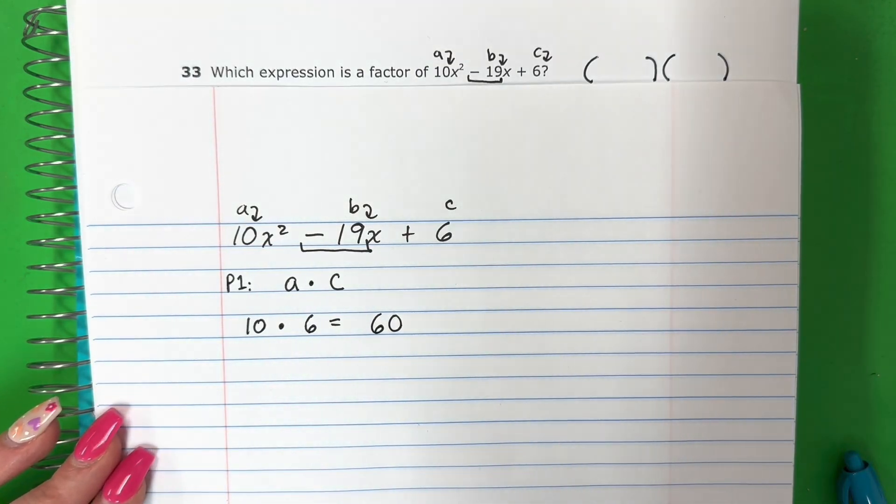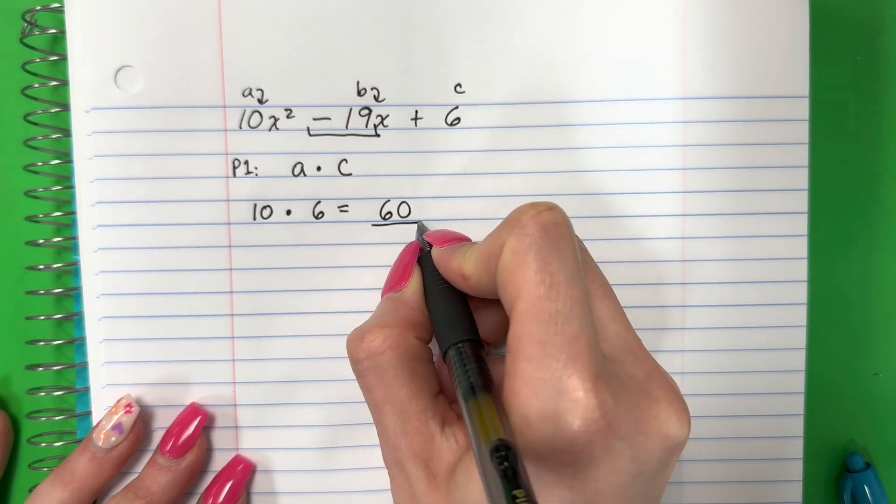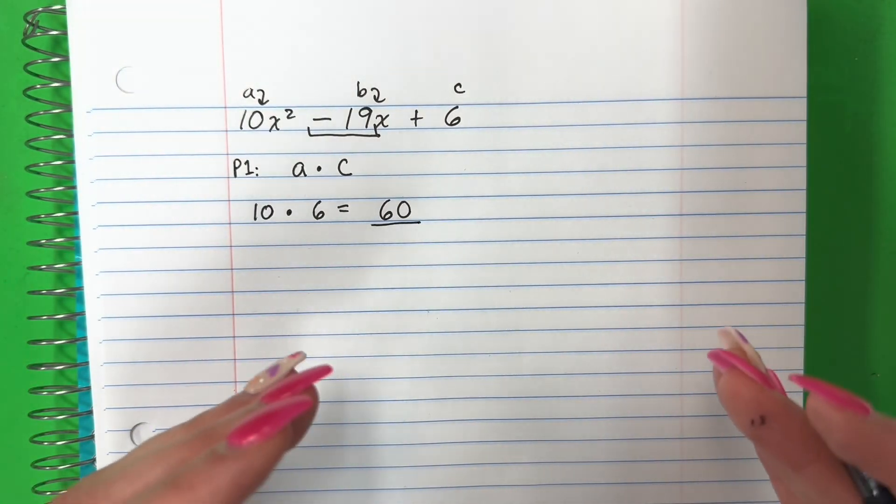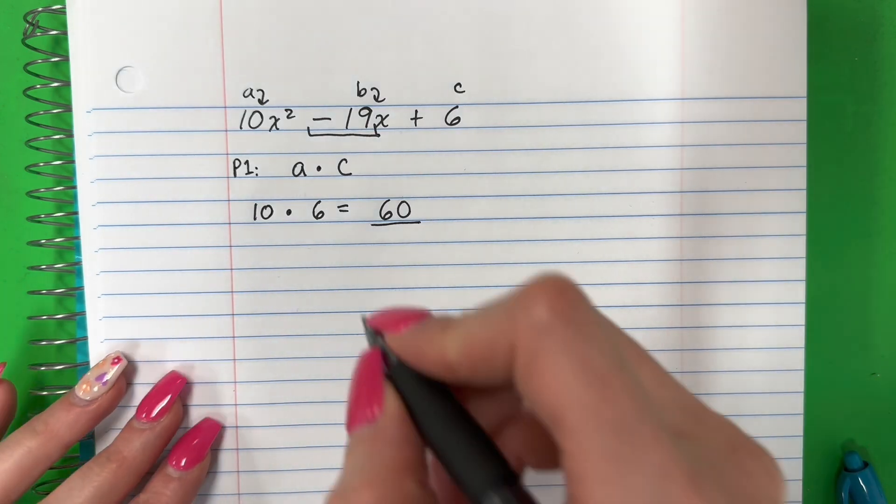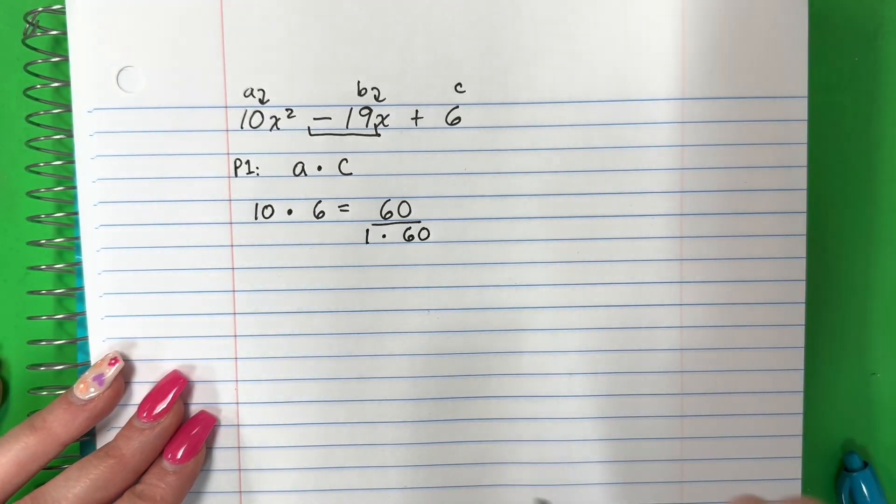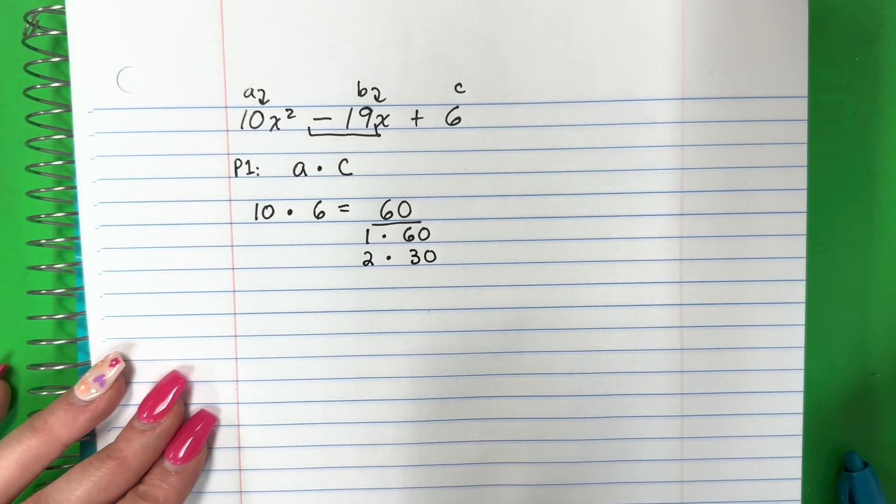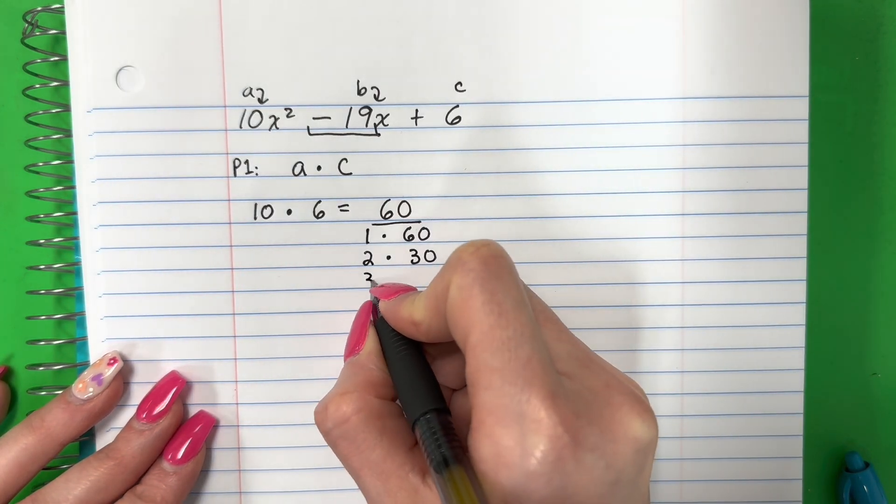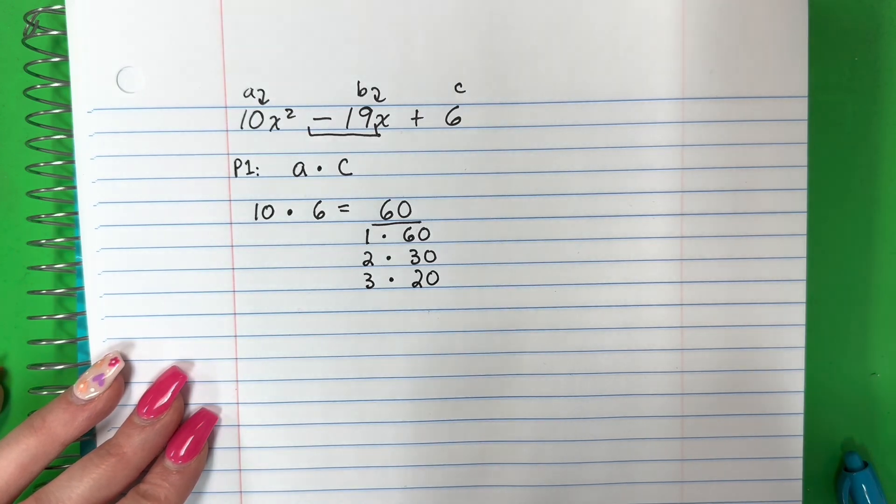Okay, now I need to find the factors of sixty. Ahora necesito encontrar los factores de sesenta. So which two numbers can I multiply to get sixty? ¿Cuál dos números puedo multiplicar para tener sesenta? I can do one times sixty. Uno por sesenta. That's sixty. Two times thirty. Dos por treinta. That's sixty. Es sesenta. Three times twenty. Tres por veinte. That's sixty. Sesenta.